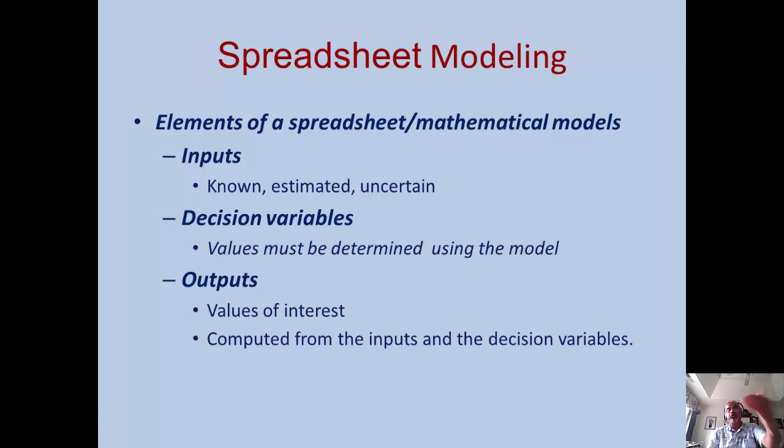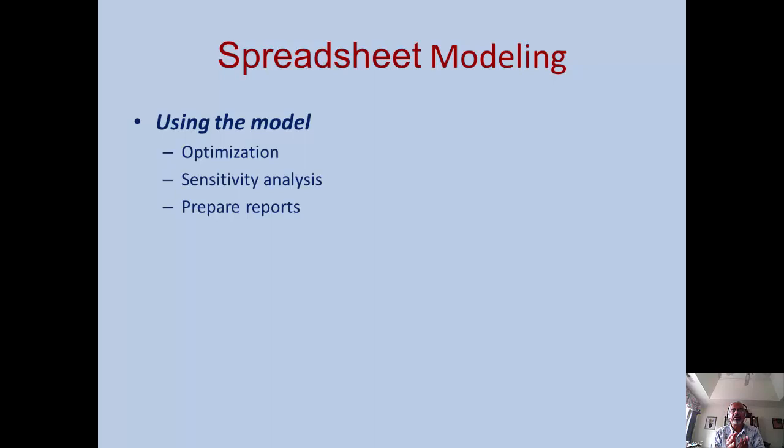They are computed using the inputs and the decision variables. A combination of inputs for a given set of decision variable values—how much of labor hours will be used, how many units of raw materials will be needed, and what will be the profit that we will be making. So outputs are various values that you compute using the inputs and the decision variables.